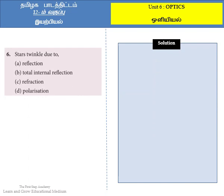Let's go to the question. Stars twinkle due to — given options: Option A, reflection; Option B, total internal reflection; Option C, refraction; and Option D, polarization. This is a kind of conceptual question.